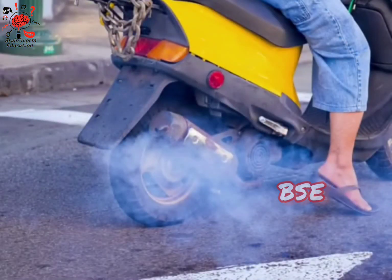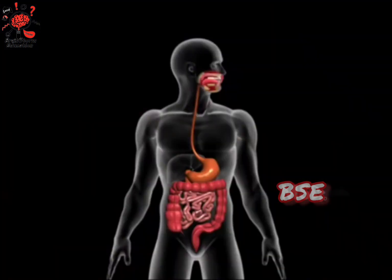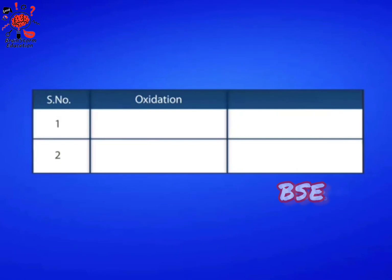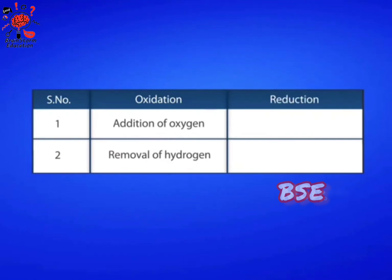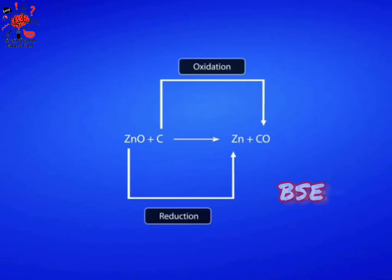Combustion of gasoline, burning of wood, and burning of food in our body are examples of oxidation. An oxidation reaction occurs as a result of either the addition of oxygen or the removal of hydrogen. A reduction reaction occurs by either the removal of oxygen or the addition of hydrogen. Oxidation and reduction occur simultaneously in a reaction; hence, it is called a redox reaction.